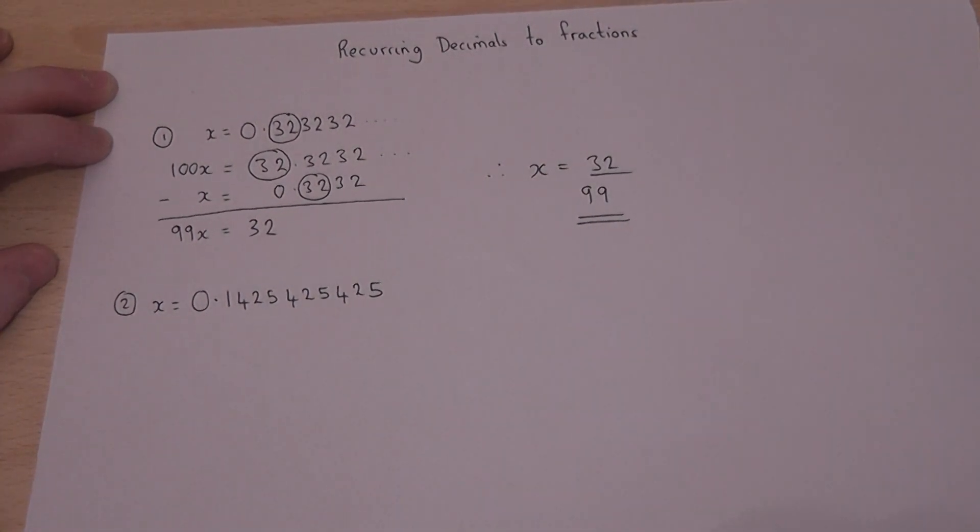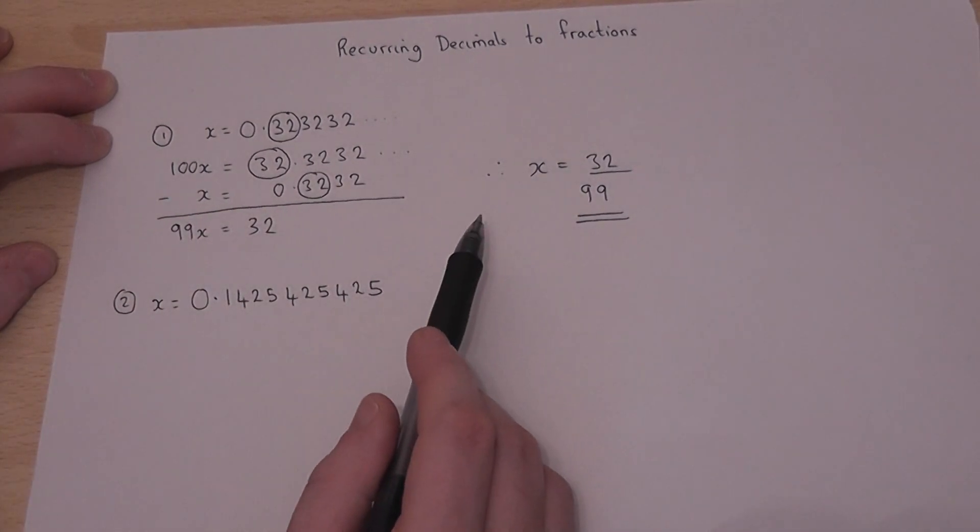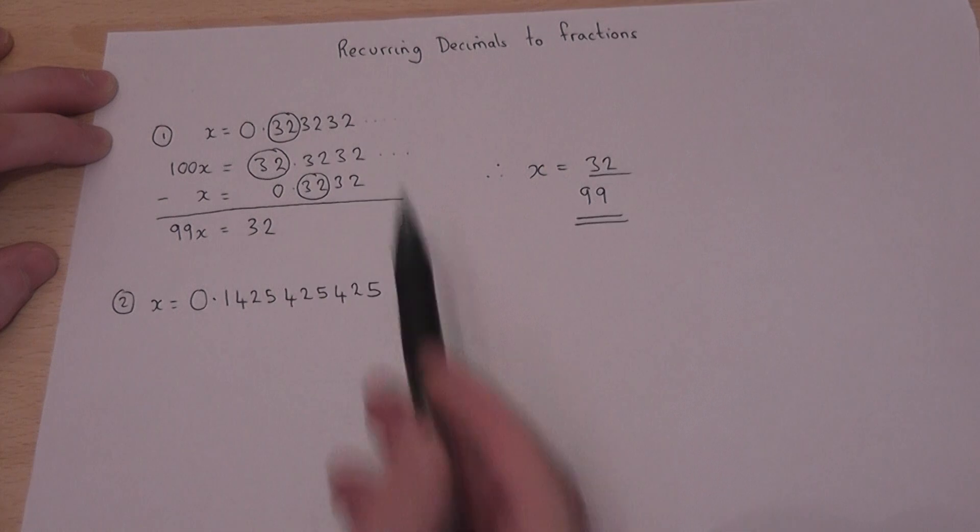So the trick works, because when you subtract away the two expressions, all the decimal places cancel off.